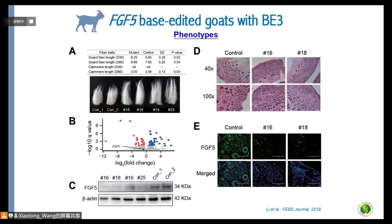We checked the FGF5 protein in skin tissues and saw that in all four edited animals, expression of the protein was almost gone. We also checked phenotypes using morphological data and observed more secondary hair follicles in the mutant animals. FGF5 expression was decreased compared with control animals, explaining why hair grew much longer compared to wild-type animals.